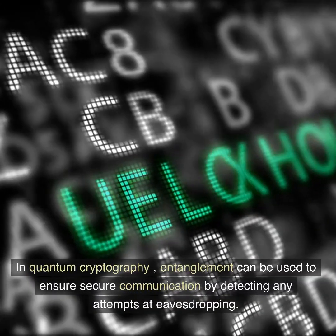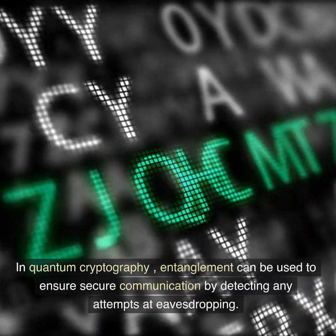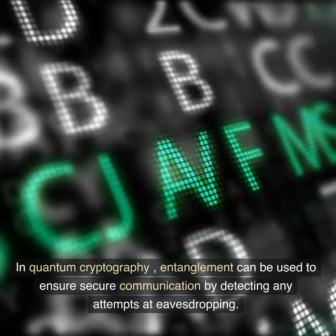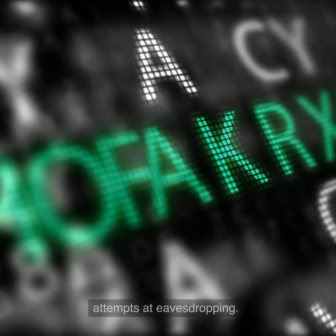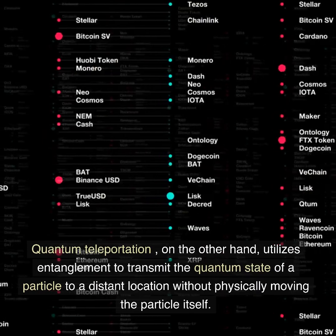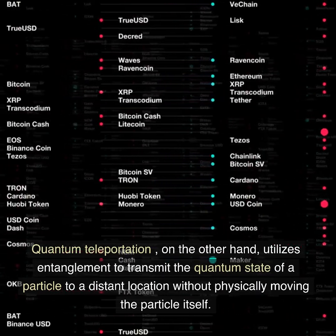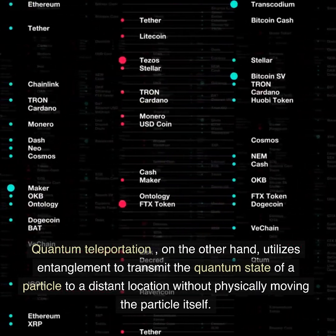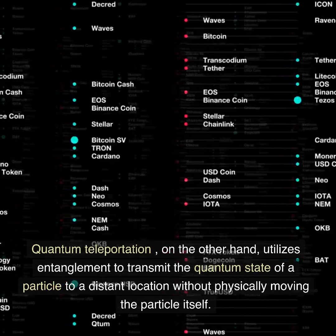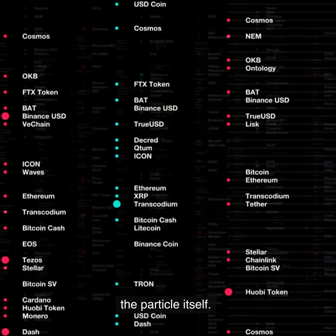In quantum cryptography, entanglement can be used to ensure secure communication by detecting any attempts at eavesdropping. Quantum teleportation, on the other hand, utilizes entanglement to transmit the quantum state of a particle to a distant location without physically moving the particle itself.